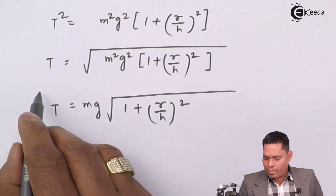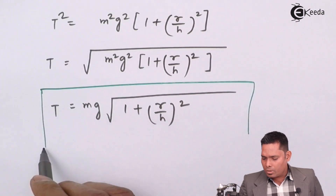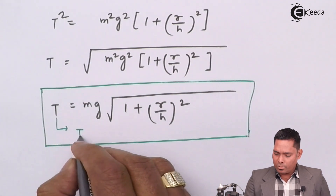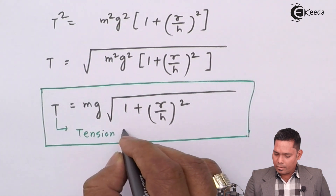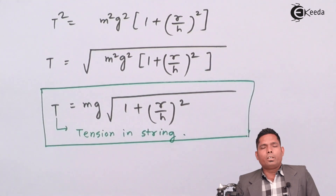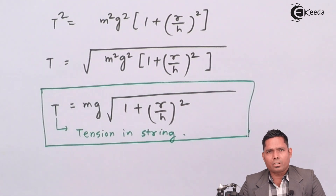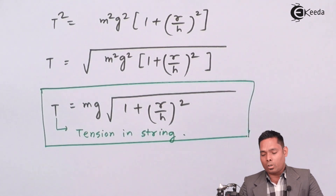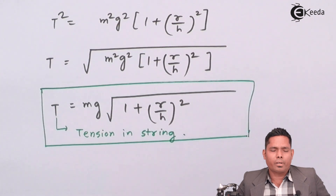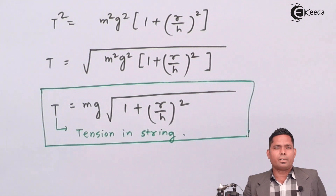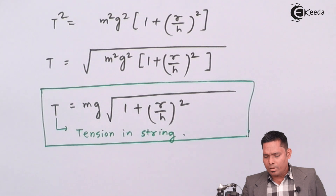So the final expression for the tension in the string of a conical pendulum comes out to be the weight mg times the square root of 1 + (r/h)². This formula can be used when the radius r and the height h of the conical pendulum are given. That's all in this video. Thank you.